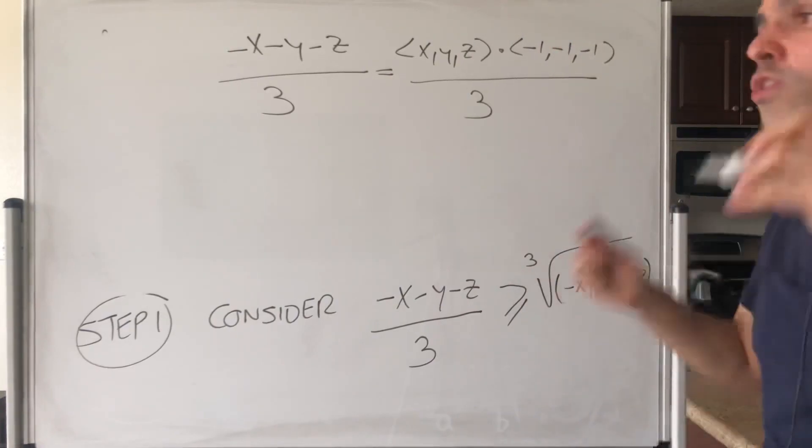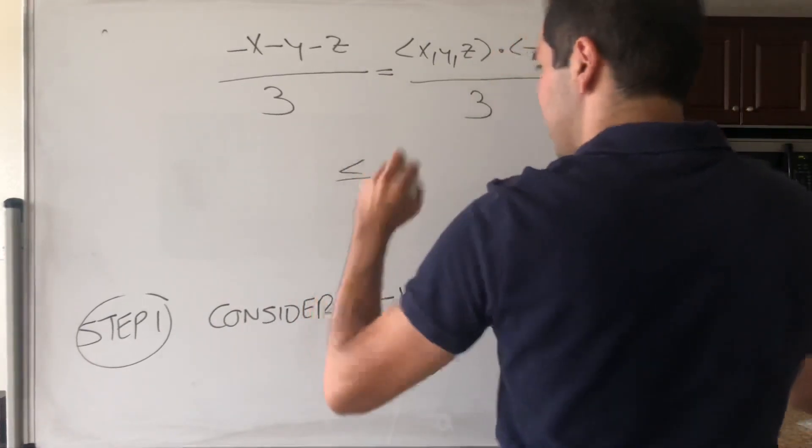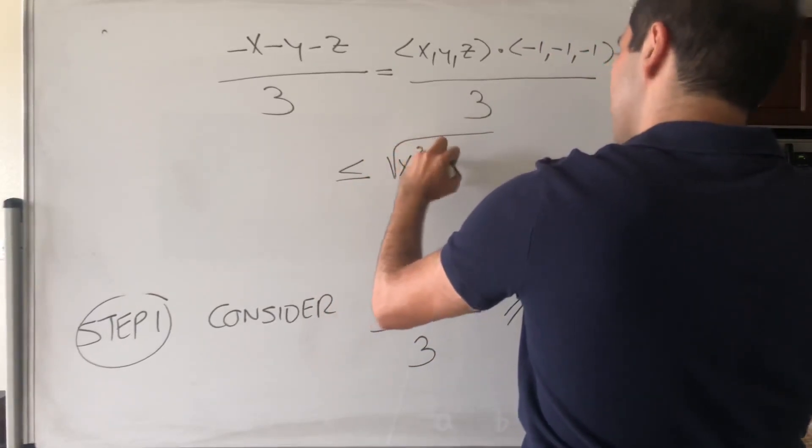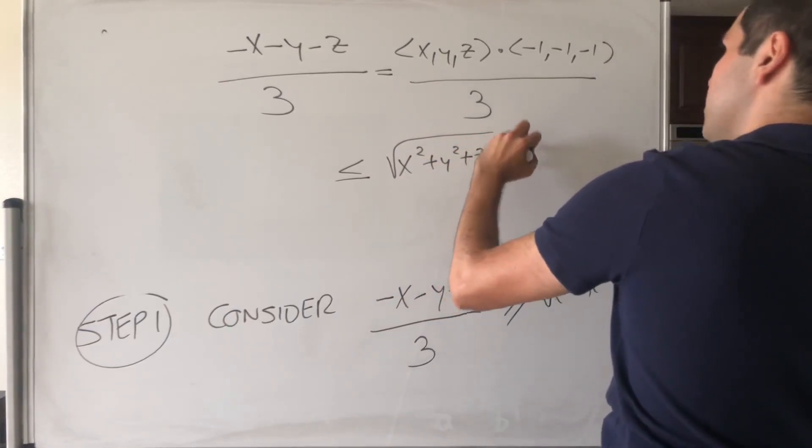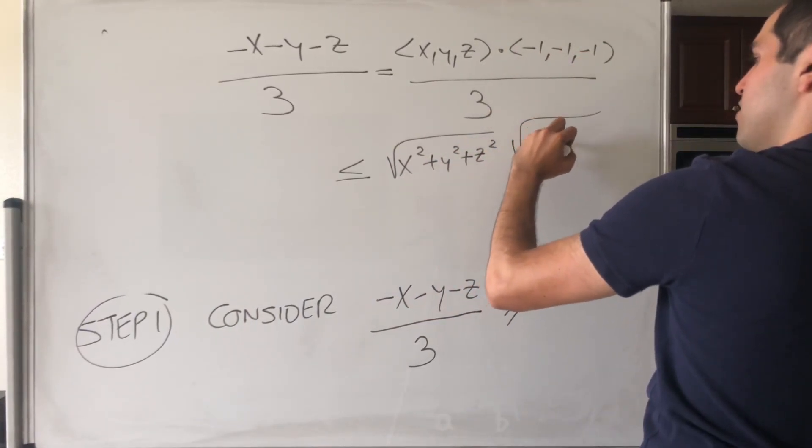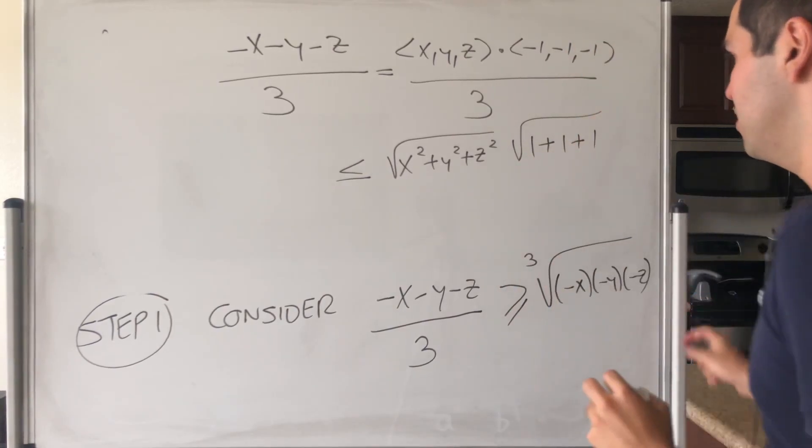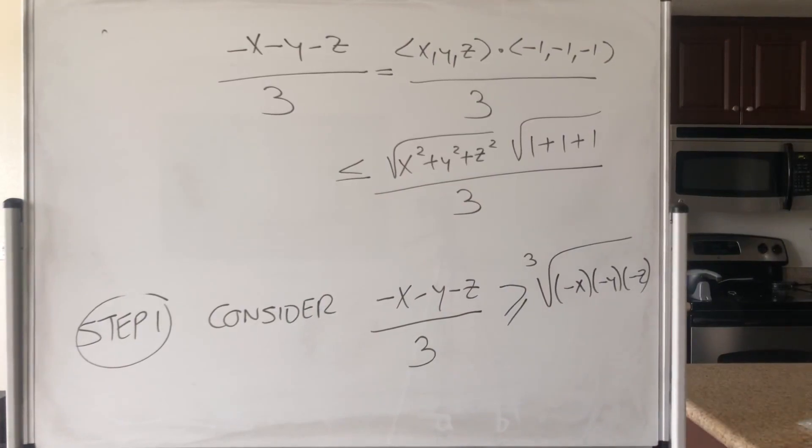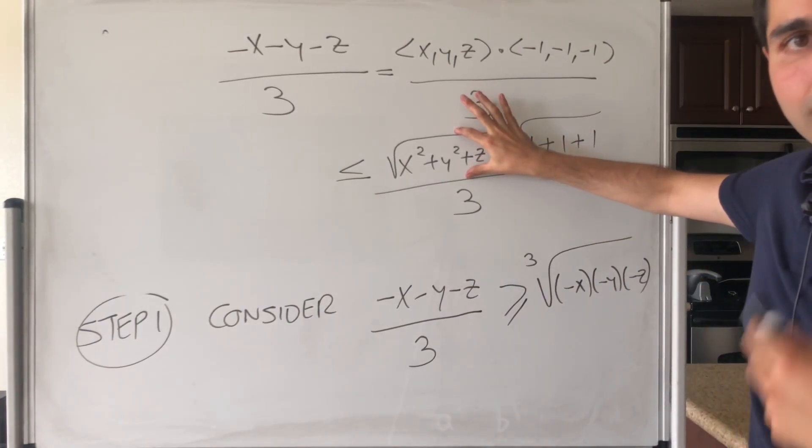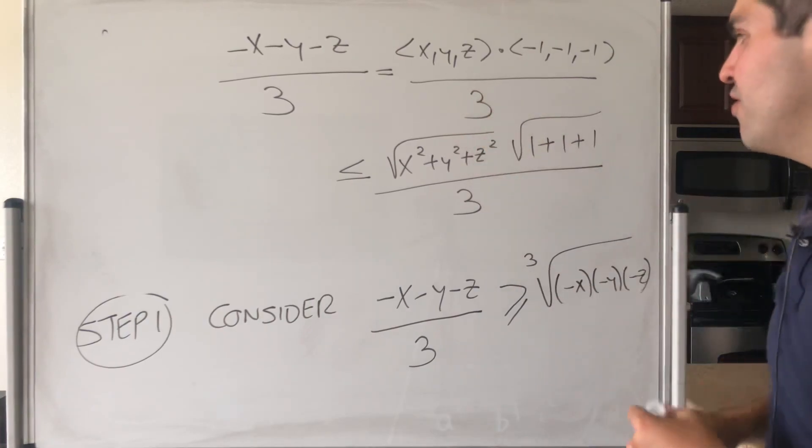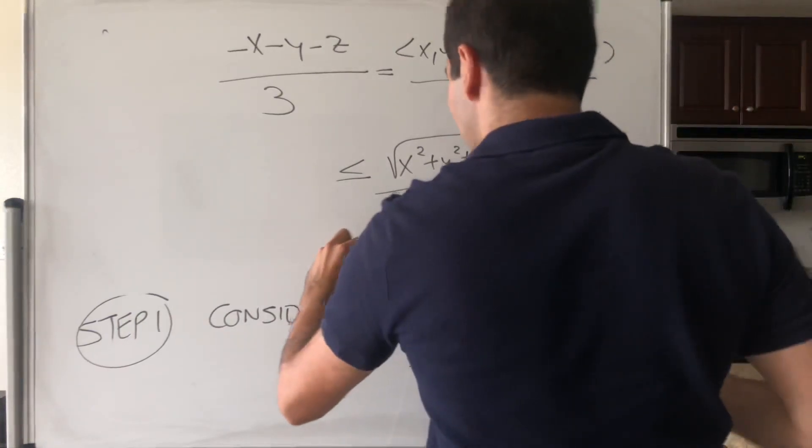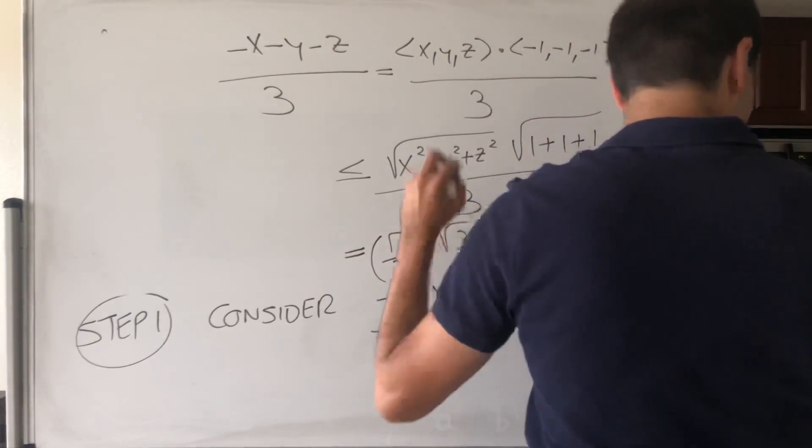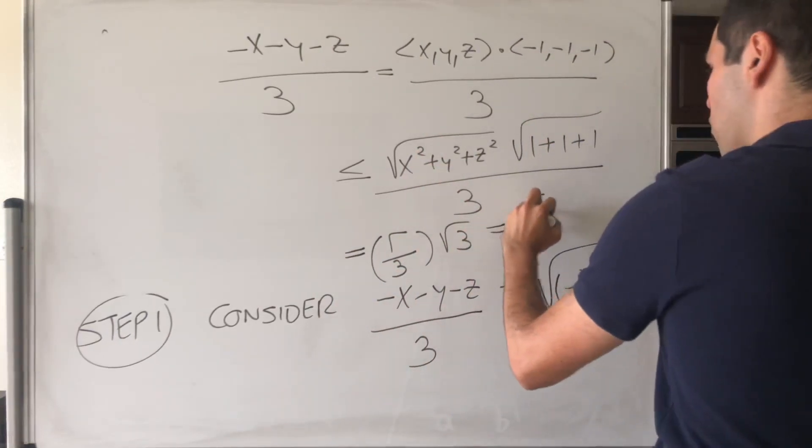But now, to this, we can just apply the Cauchy-Schwarz inequality, which simply says, this is less than or equal to the square root of x squared plus y squared plus z squared, times the square root of minus 1 squared minus 1 squared minus 1 squared. So square root of 1 plus 1 plus 1 over 3.